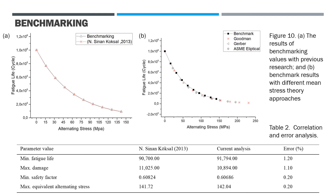The results of the simulation above have been compared with the study conducted by Coxall in 2013, which can be seen in figure 10a. Figure 10b shows the simulation results with variation of the mean stress theory used. In table 2, correlation and error analysis show that the error is very small, about 0.2% to 1.2%, indicating that this benchmark is valid and can be used to analyze fatigue phenomena in other models.